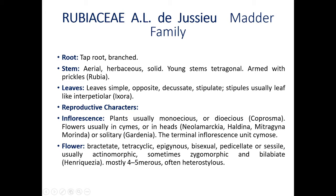Leaves are simple. Opposite and decussate phyllotaxy is there — opposite decussate phyllotaxy means two leaves develop from each nodal portion, they are opposite to each other, and another pair above the stem becomes opposite to the first pair. Stipulate — small leaf-like structures are present. Stipules are usually lip-like. Interpetiolar stipules are present, meaning stipules are present in between the petioles. Example: Ixora.